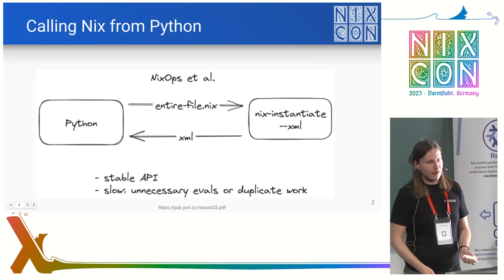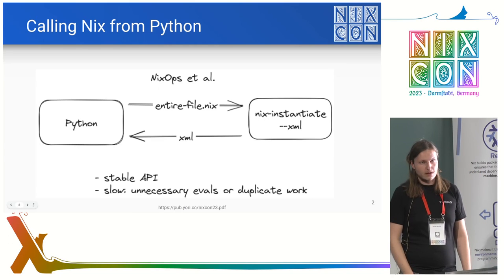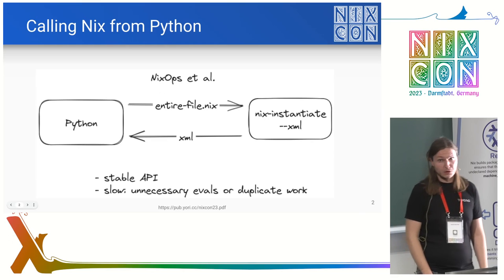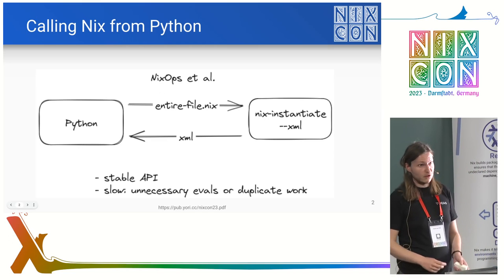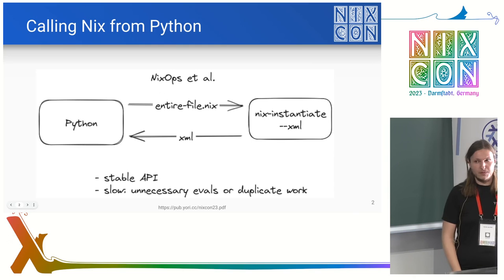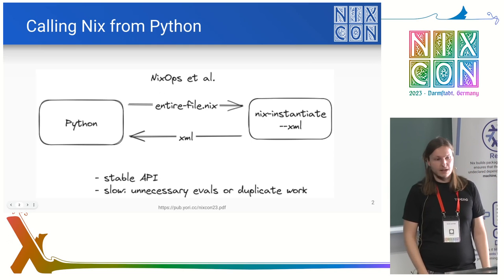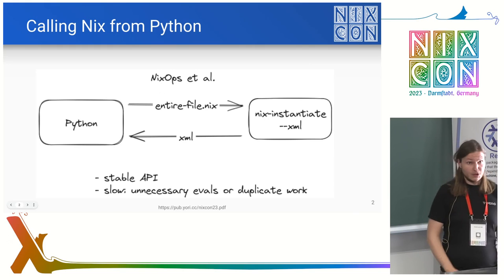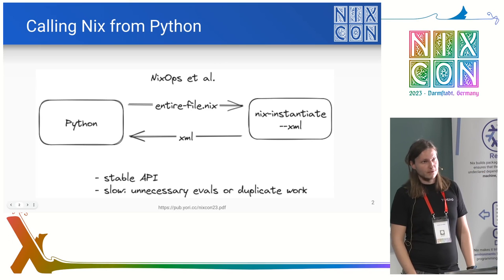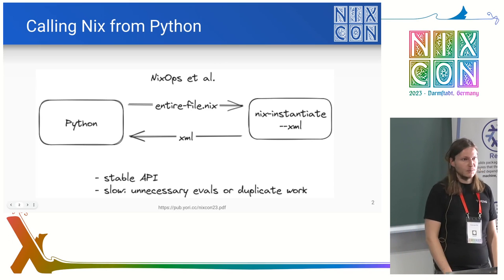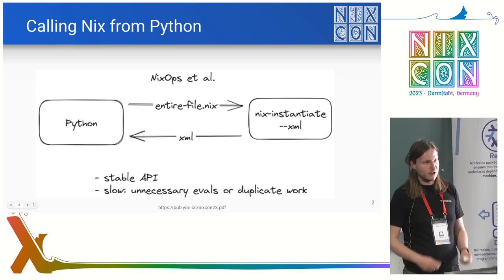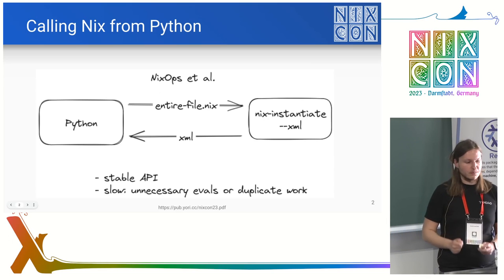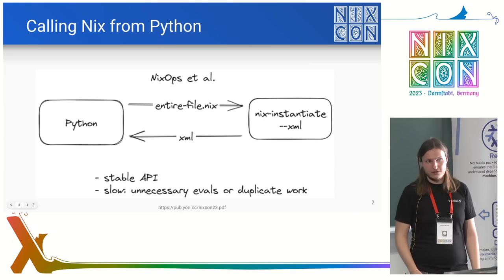What you do is write a Nix file, give it some arguments based on what you want to know, call 'nix instantiate --xml', which does a lot of work, and then it returns a big XML or JSON file that you parse. This is quite slow, because you have to evaluate all of your file — not just the specific parts you want. And if you're interested in a tiny part, you have to evaluate all of it again just to drill down.